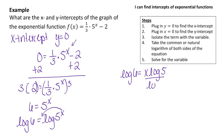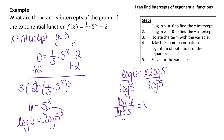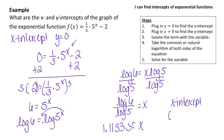Dividing both sides by the log of 5 gives the log of 6 over the log of 5 equals x. On the calculator, enter log of 6, close parentheses, divided by log of 5, close parentheses. That gives x approximately equal to 1.1133. So the x-intercept is at the point (1.1133, 0).